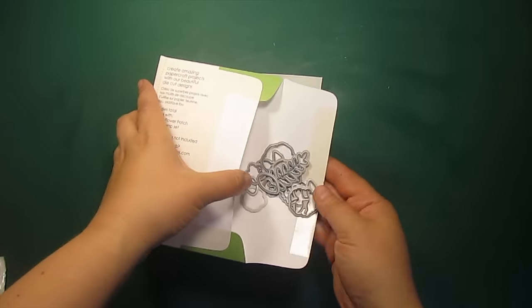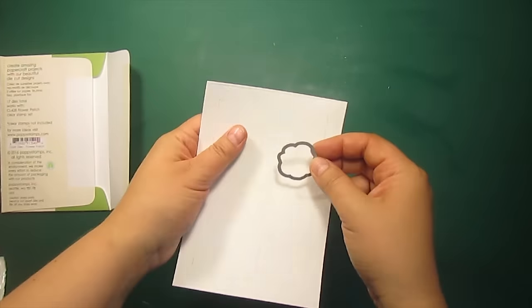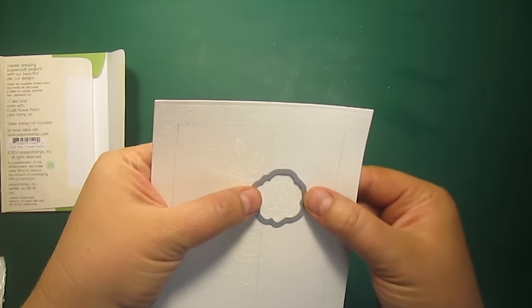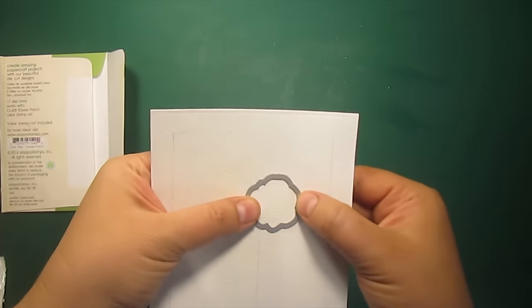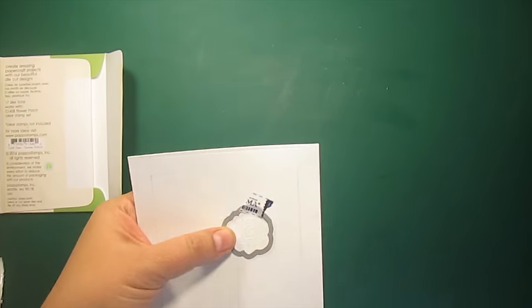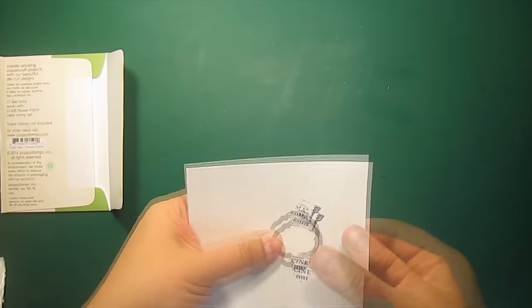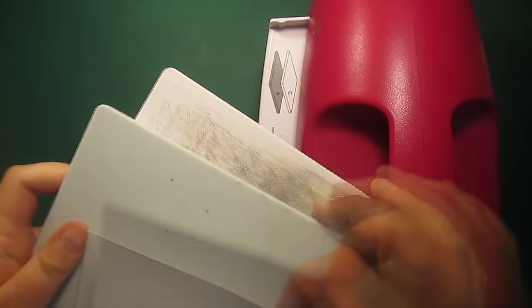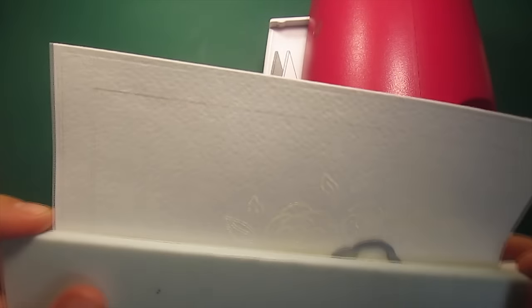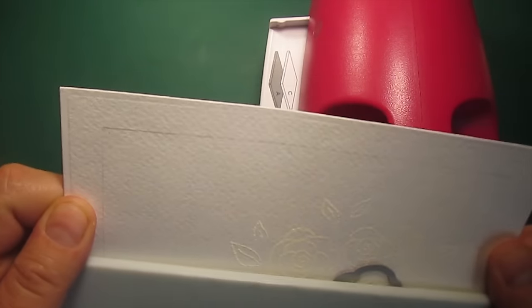When everything is heat set I'm placing the matching die over the rose image and taping it down. Then I'm aligning the pencil line with the edge of a cutting plate and I'll be running it through my grand caliber.